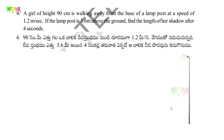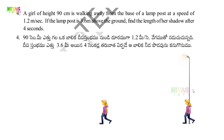Here we have a street light. We will check the situation — a girl walking away from the base of a lamp post at a speed of 1.2 m per second. After 4 seconds, we need to find how far she has traveled.